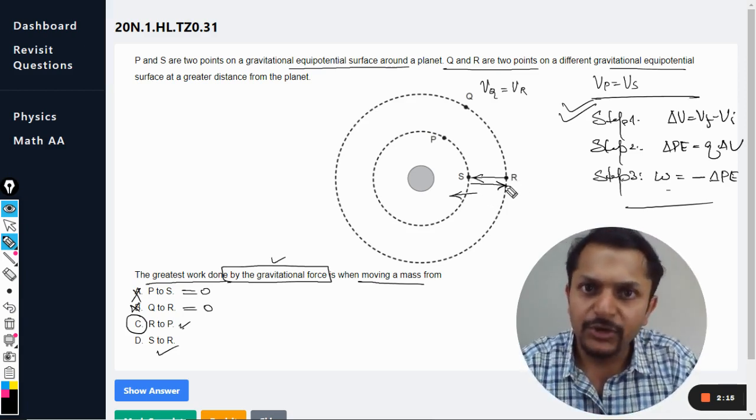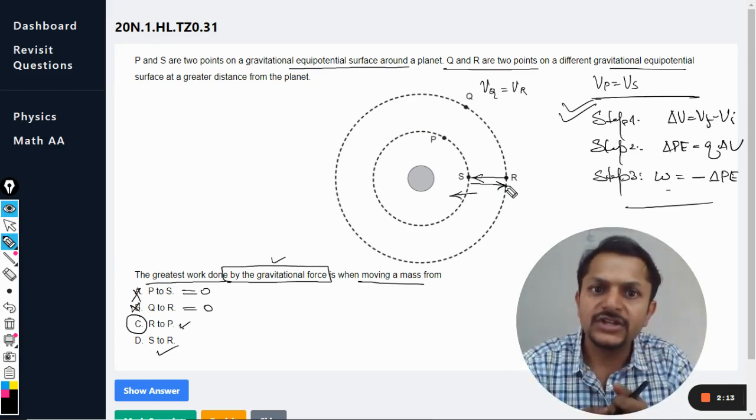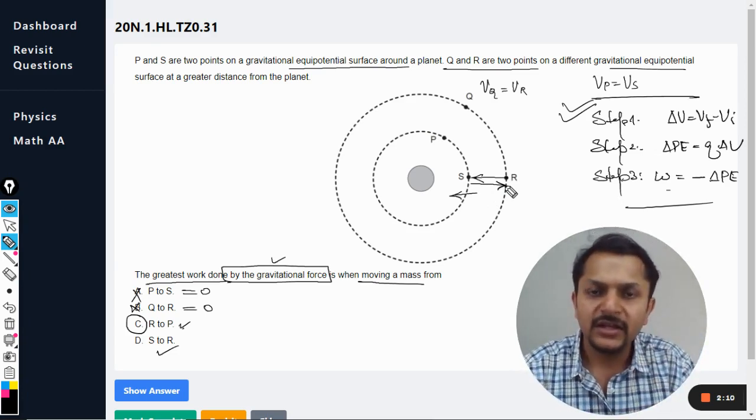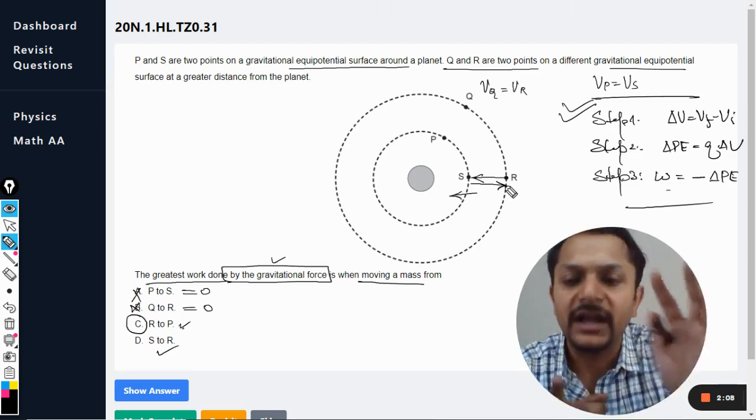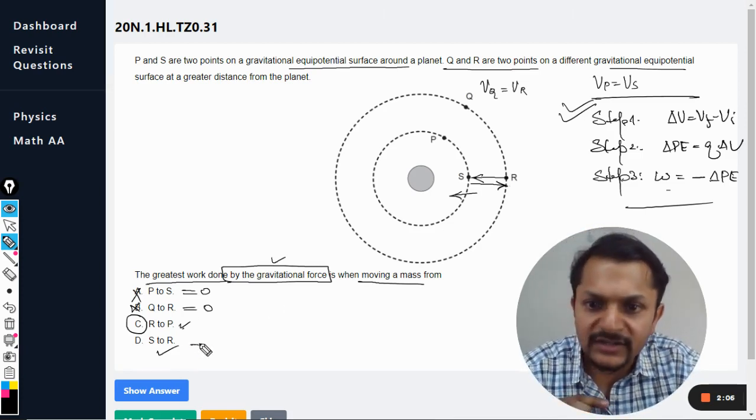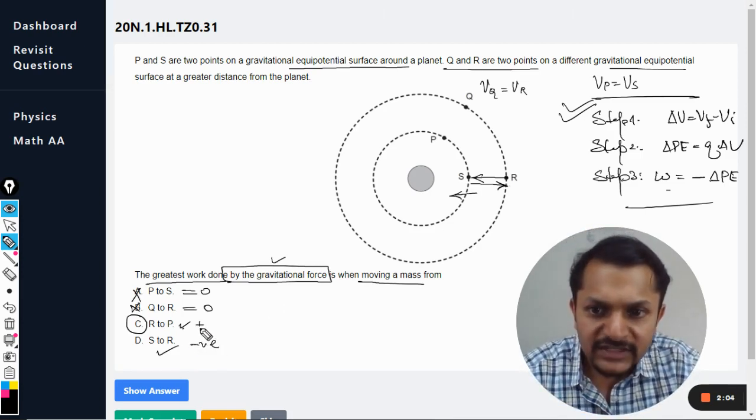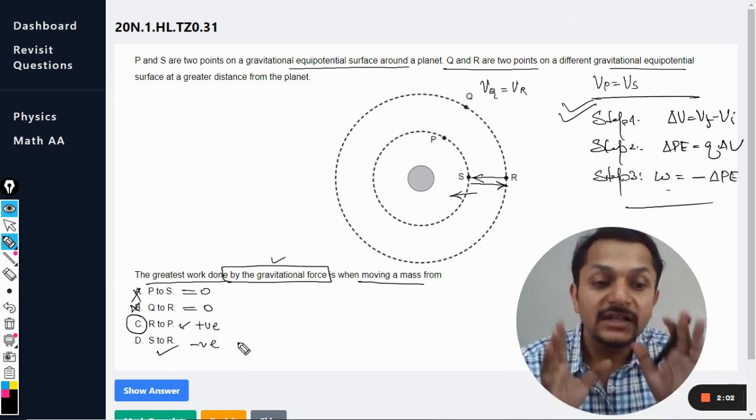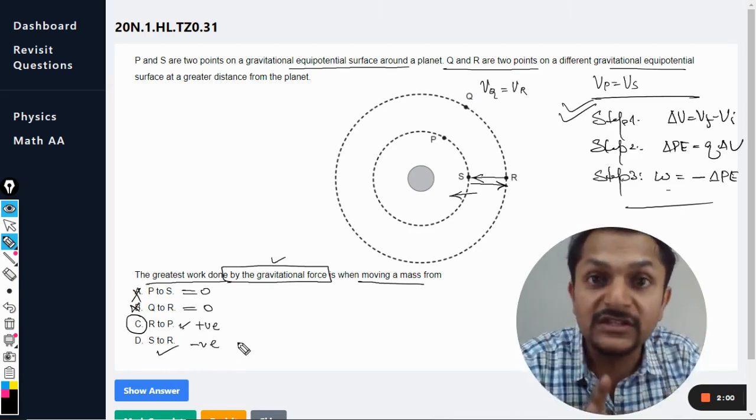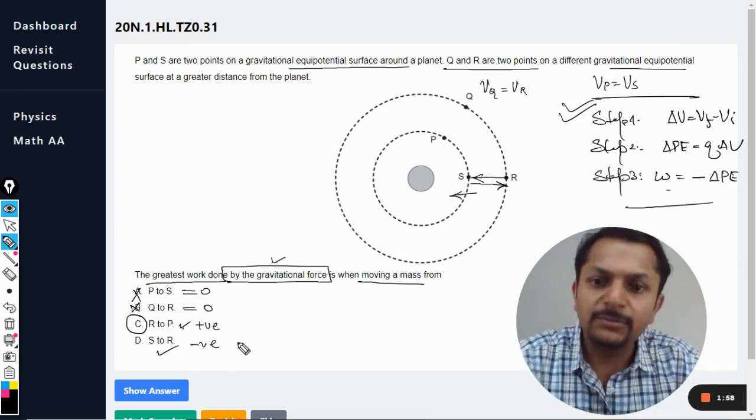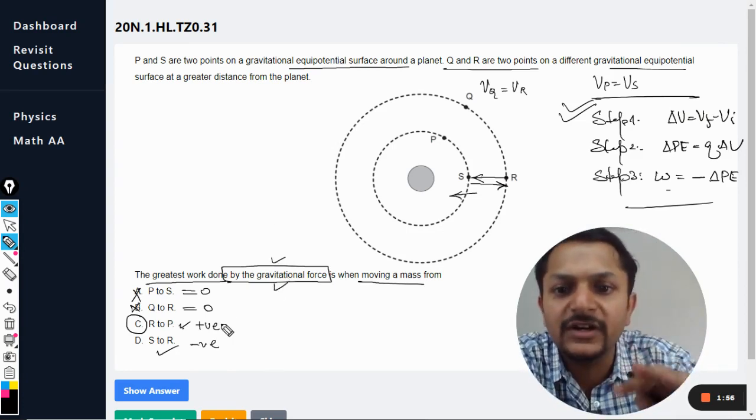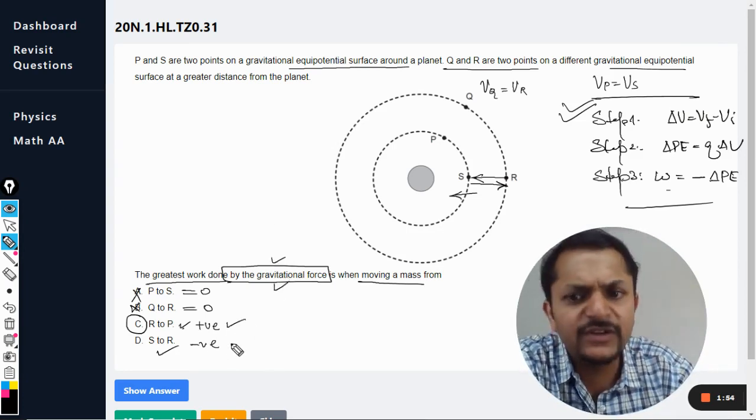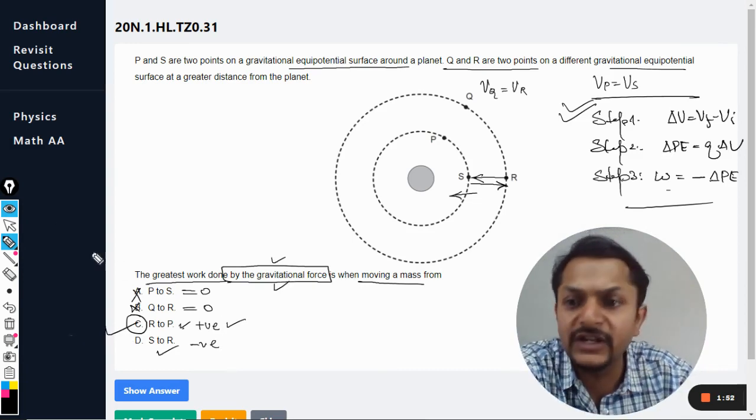But the point is moving away from it, from the planet. So the work done by gravity is negative. So from S to R it is negative, from this it is positive. But they are indeed equal to each other in magnitude, but because it is written we want to find the work done by gravitational force, positive will be more than negative. So the answer will definitely be C.